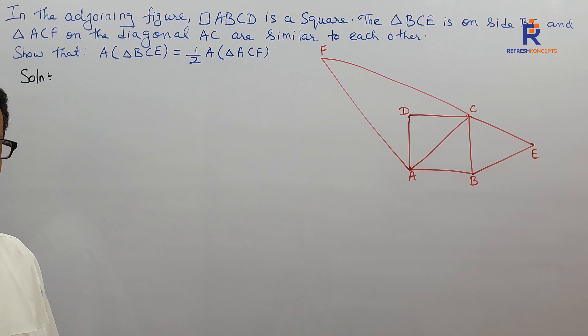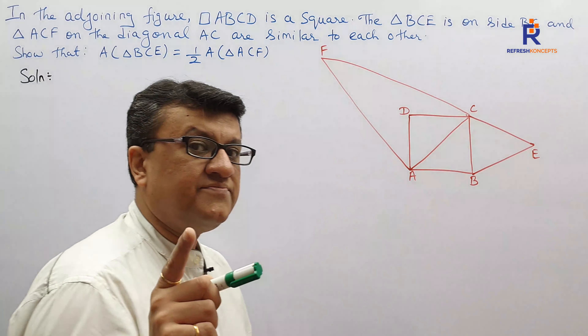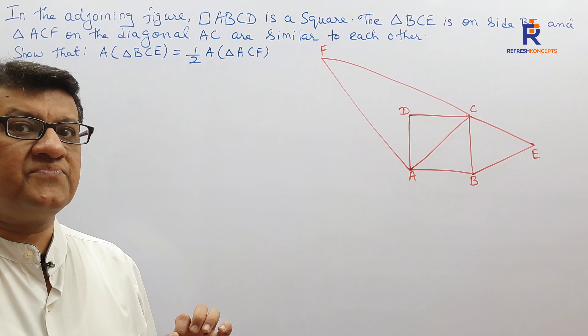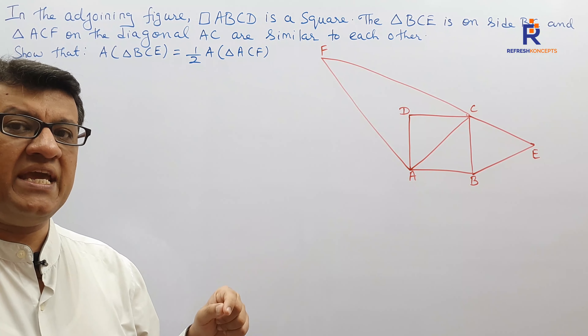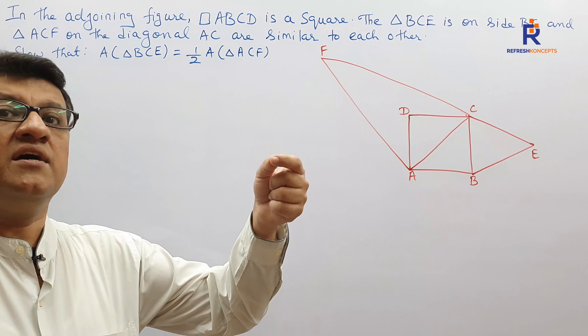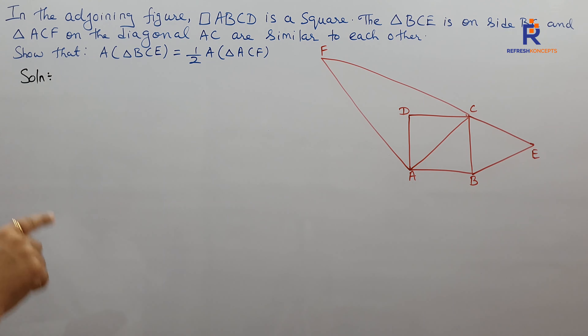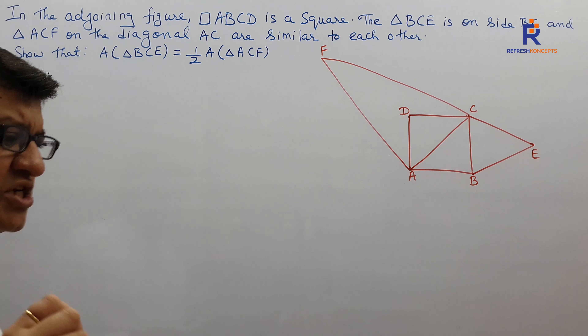We are given that the triangles are similar, and we need to show that the area of triangle BCE equals half the area of triangle ACF. Since the triangles are similar, we think about the theorem on areas of similar triangles: area of one upon area of another equals the square of the ratio of corresponding sides. Before applying that, we need the relation between side and diagonal in a square.